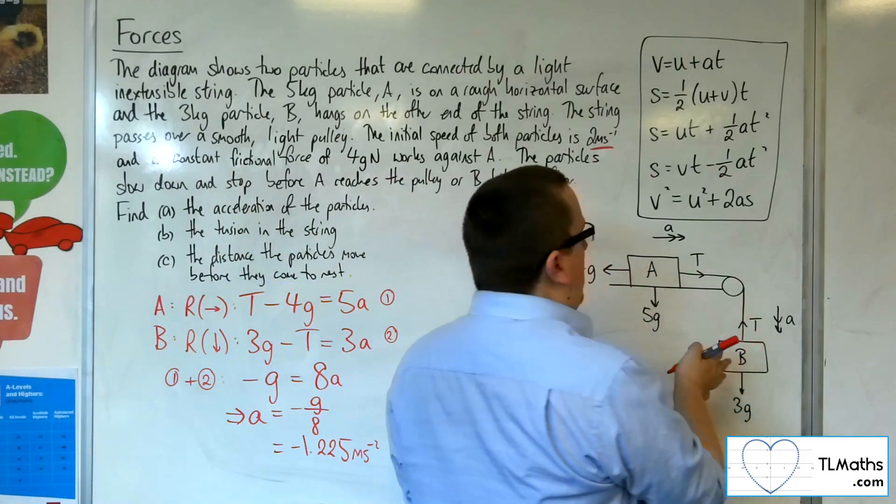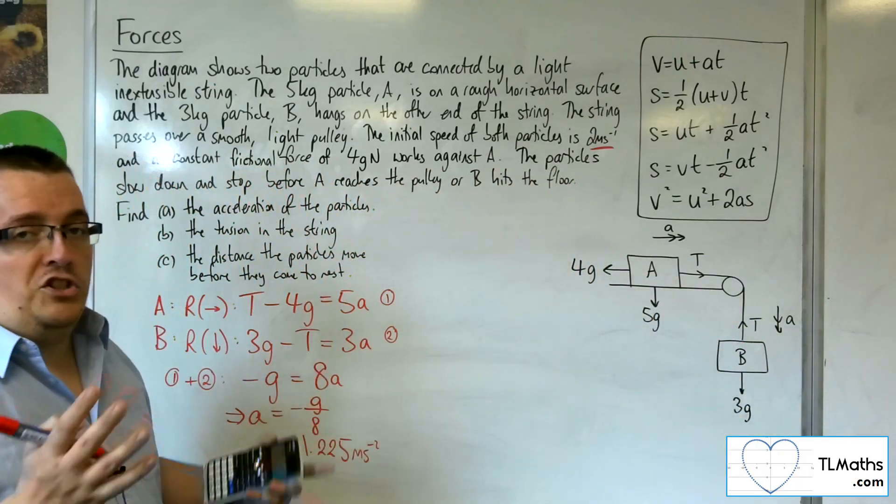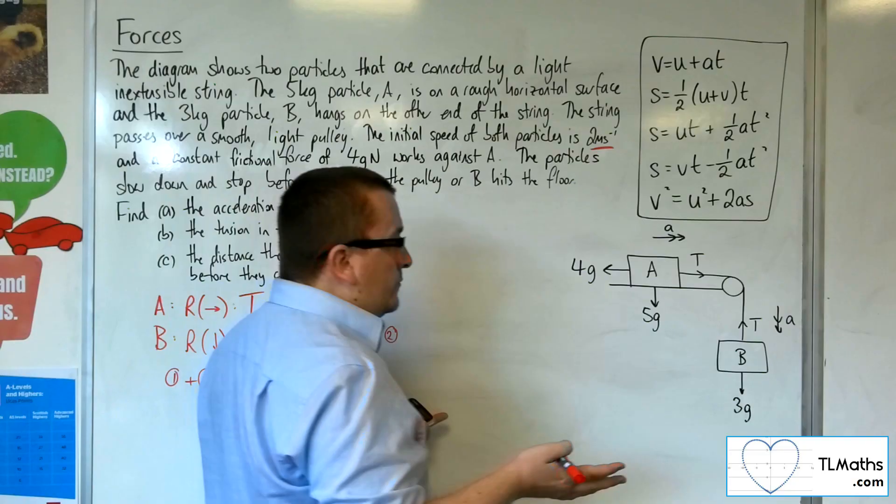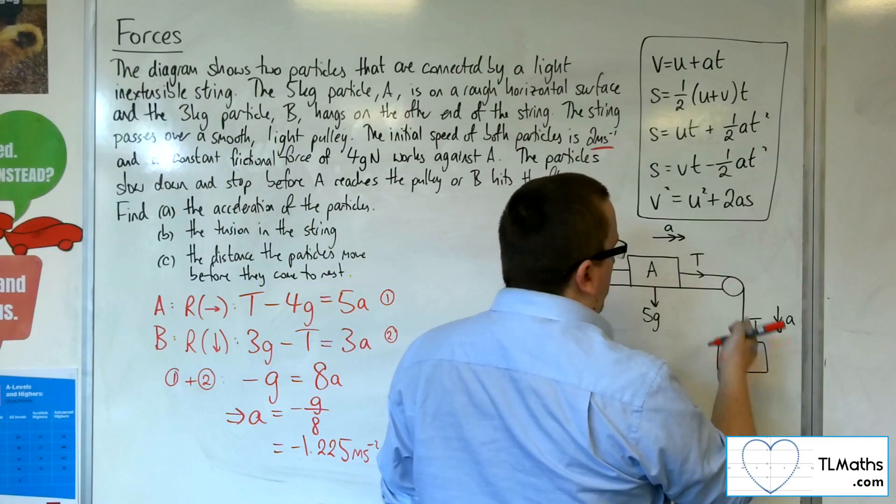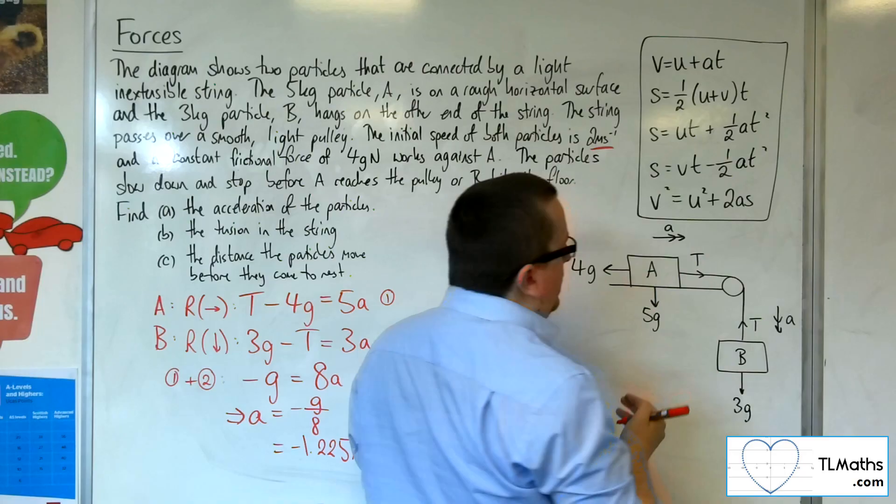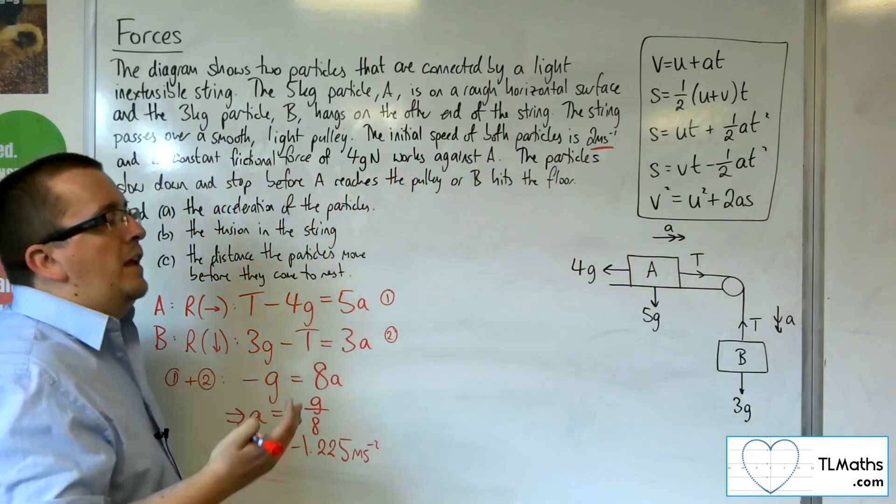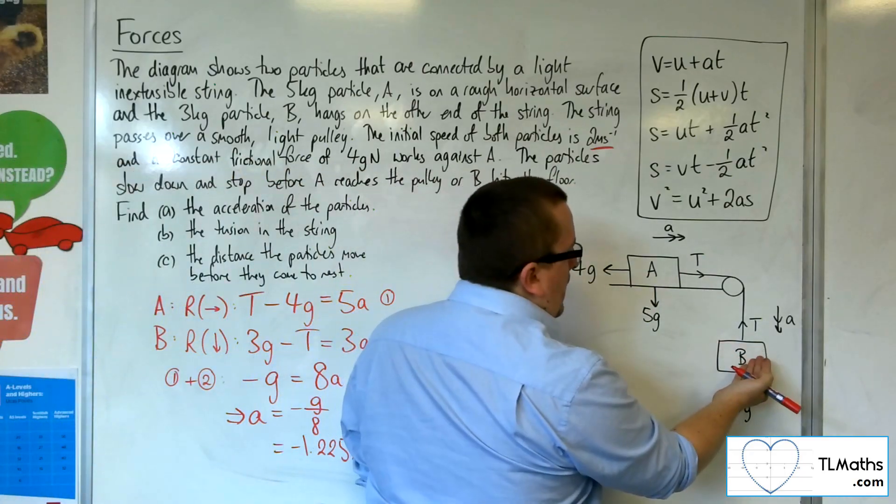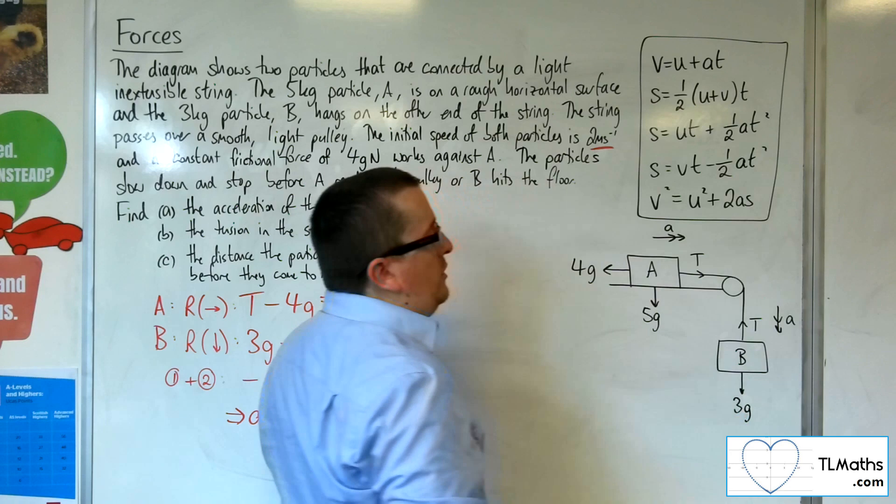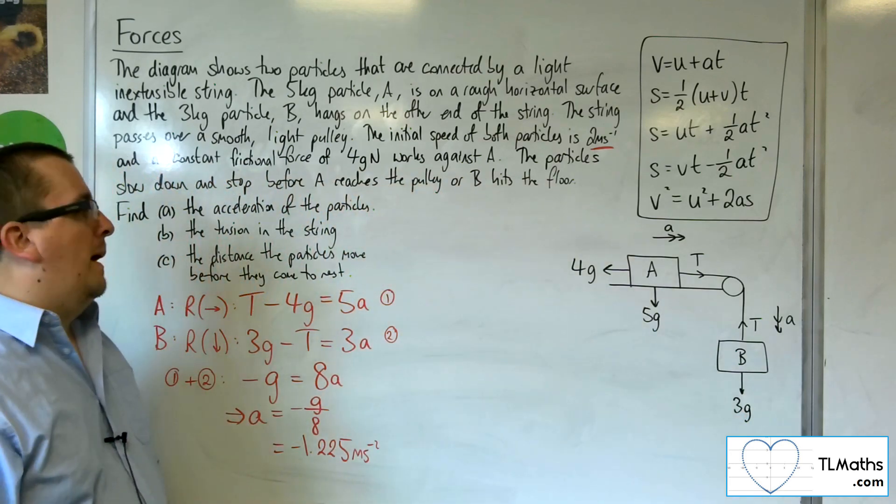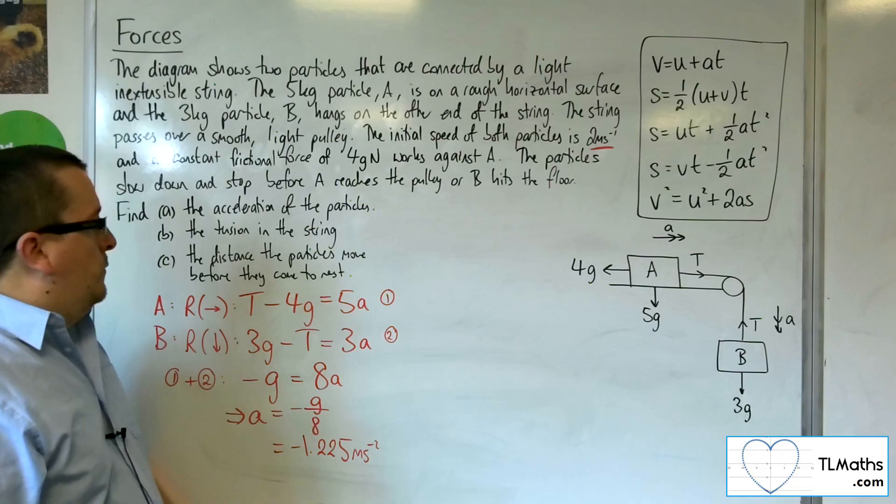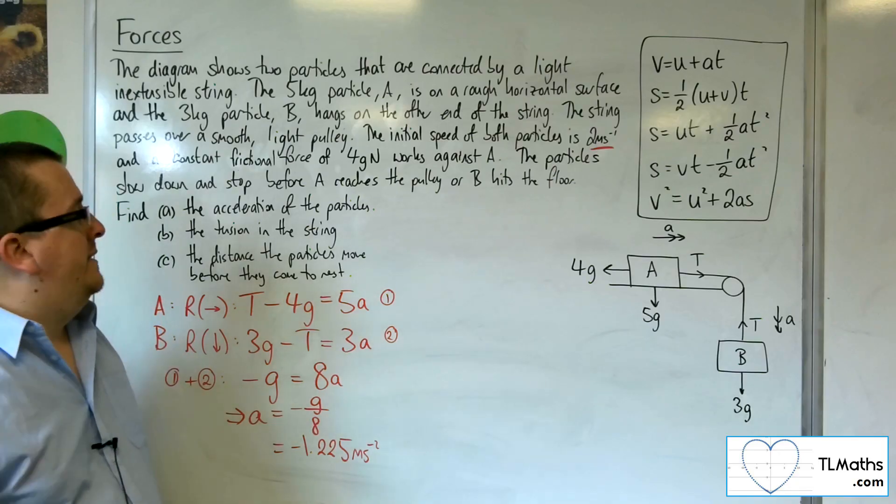Because if you just had these two particles, and you've got this particle here, and that particle there, and that one weighs less than that one, then there shouldn't really be the option for B to really drag A along the table, due to its less mass. So we shouldn't really be surprised by that figure being negative.